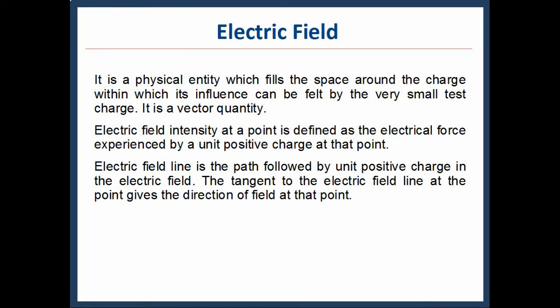Electric field intensity at a point is defined as the electrical force experienced by a unit positive charge at that point. Electric field line is the path followed by unit positive charge in the electric field. The tangent to the electric field line at the point gives the direction of field at that point.